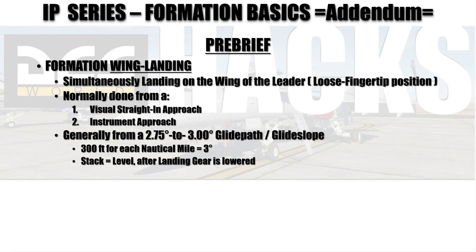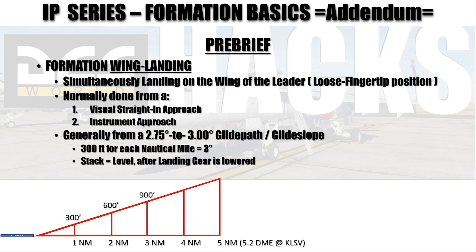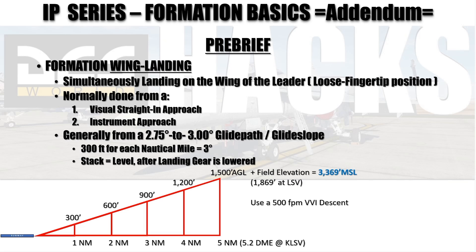On a 3-degree glide path, the runway is in the lower left — for each nautical mile away from the runway you are 300 feet above the ground, so at 5 miles you'll be at 1500 feet AGL. If you factor in Nellis's field elevation of 1869 feet, the altimeter mean sea level display will be 3,369. Using a typical 500 foot-per-minute vertical descent on your VVI will mimic a basic ILS approach.